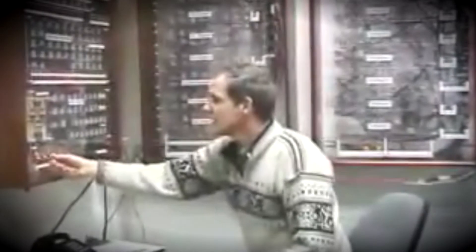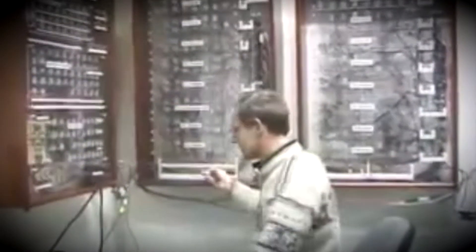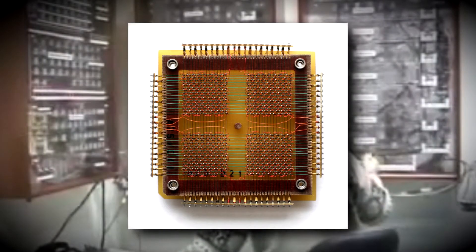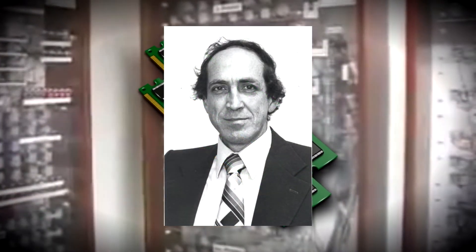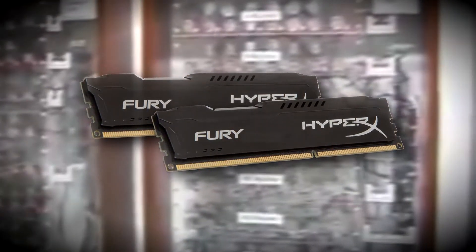Early computers used relays, which were mechanical counters to store simple data that needed to be accessed by the CPU. These relays could not randomly access data, and instead would just read the data in the order it had been written. It wasn't until 1947 that true random access memory started to surface, the most prominent of which was magnetic core memory, which saved data by shifting magnets around to represent bits. Magnetic core memory was the standard up until around 1970, when solid-state RAM was invented by Robert H. Dennard. Robert's design is what all modern RAM is based on, though we've improved storage size and write speed exponentially.